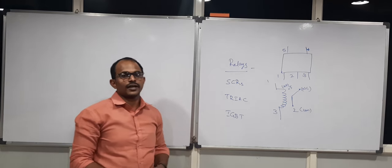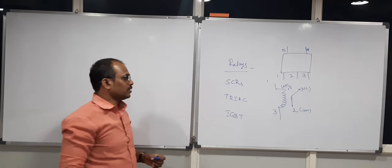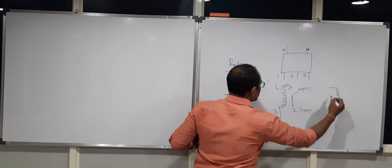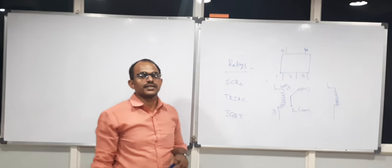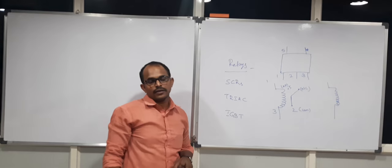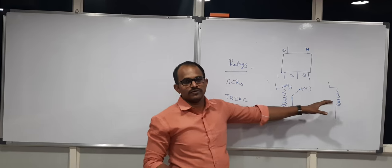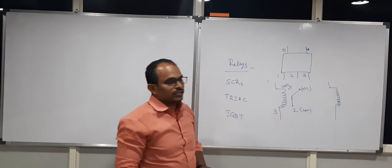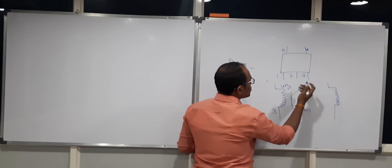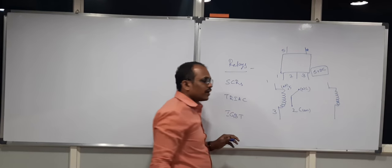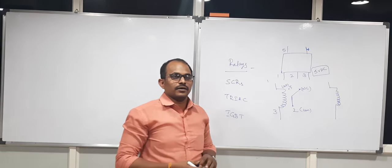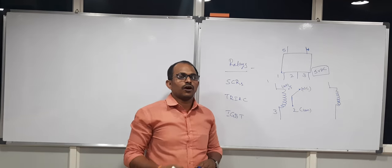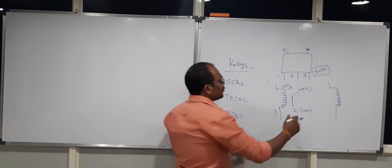Now, how does this relay drive an electrical load using a microcontroller? For the physical connection, pin 1 is connected to the required DC source. Relays are available in voltage categories: 5V DC relay coil, 12V DC relay coil, and 24V DC relay coil. You need to identify the operating voltage of the coil and provide sufficient voltage. For most microcontroller interfaces, 5V DC relay coils are preferred. High-end products may use 12V or 24V DC relay coils depending on sensor outputs.